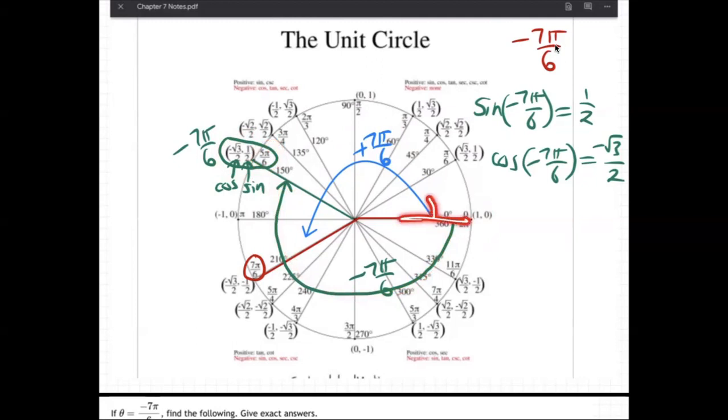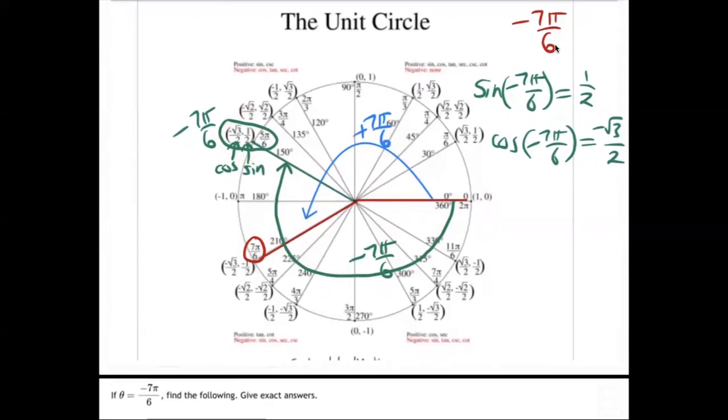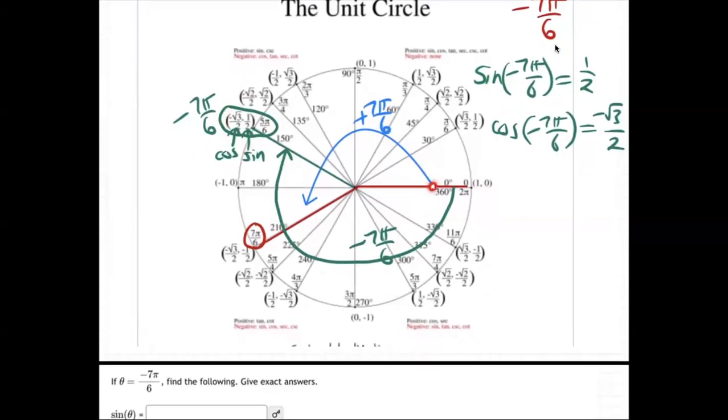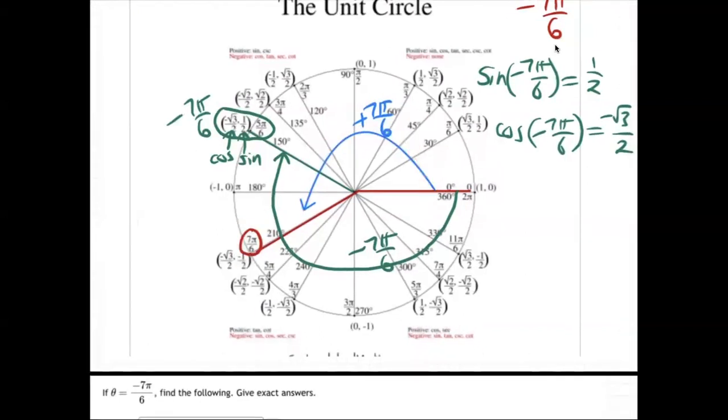So positive angles, you start at zero, and you go up until you find it. Negative angles, you start at zero, and you go down and around until you find it. Well, how far do you go? Well, just find out how far to get to the positive one and do the same thing in the opposite direction for the negative one. So to get to positive 7π over 6 here, I had to go halfway around in one more line. There's positive 7π over 6.